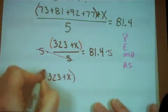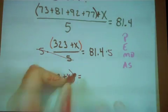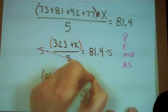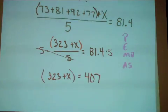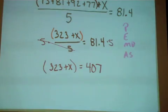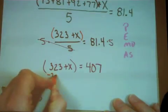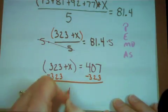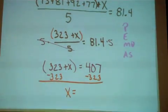My 323 plus x inside of its implied parentheses will be equal to, well, let's use our calculator, 81.4 times 5. I get a total of 407. And now the last thing I want to do is get that x alone. How do I get rid of a positive 323? I subtract 323, and I will find the test score that I need to have.